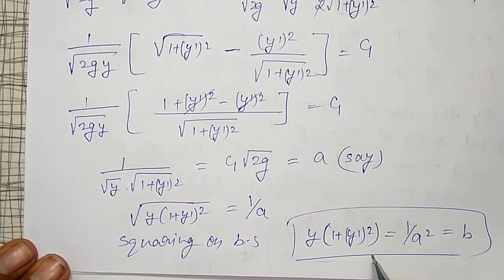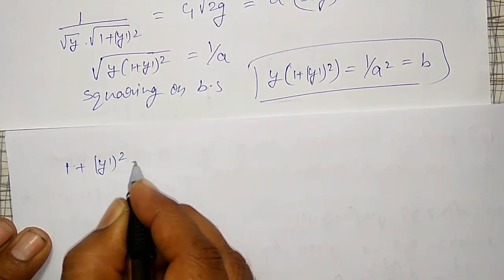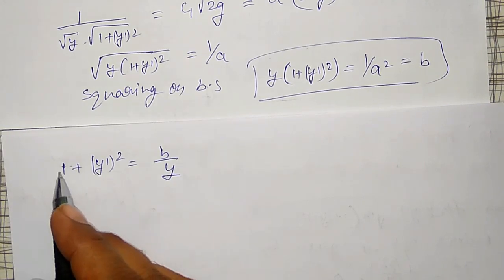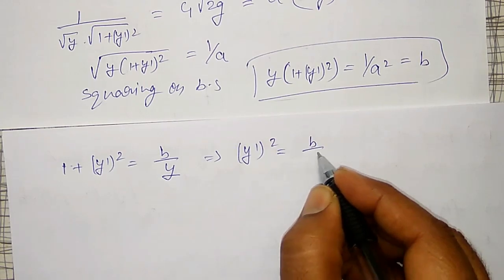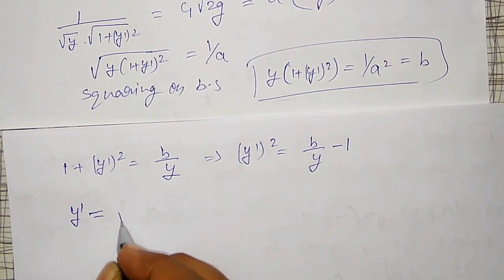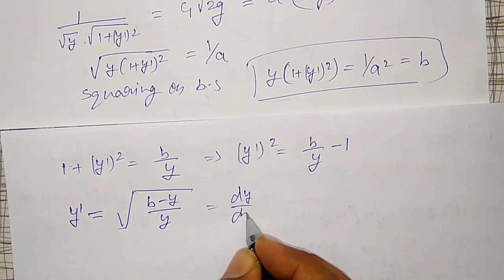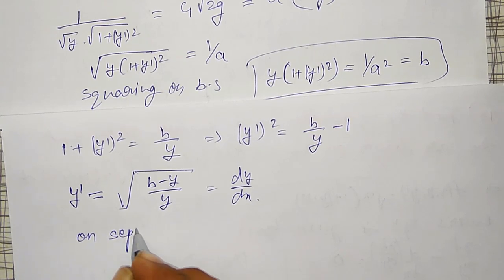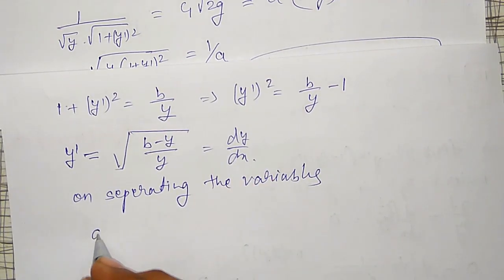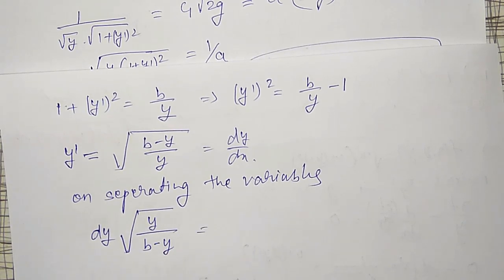Solving for y': 1 + y'² = B/y, so y'² = B/y − 1 = (B−y)/y. Therefore y' = √((B−y)/y). Since y' = dy/dx, separating variables gives: √(y/(B−y)) dy = dx.